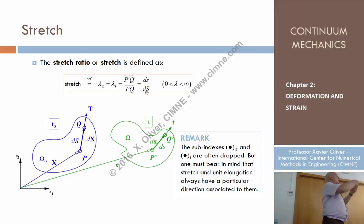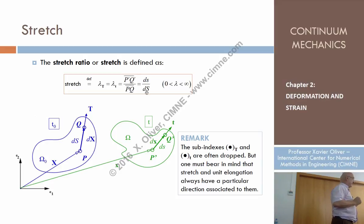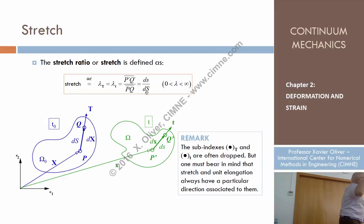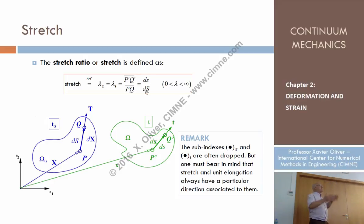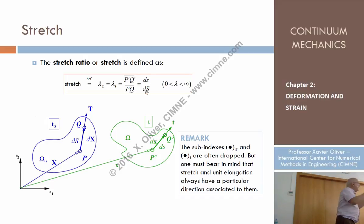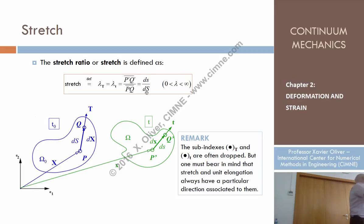So, this is: how much is the length per unit of original length? How much is the new distance — the final distance — per unit of original distance? So, that is the definition of a stretch: the value of the distance of two neighboring particles before deformation, at the current configuration, per unit of distance at the reference configuration. That is strictly written here.